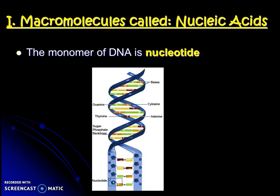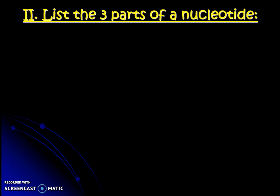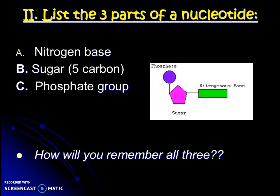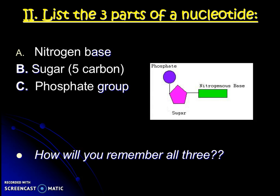A nucleotide is even more detailed than that, so let's learn about the parts that make up a nucleotide. There are three different components that make up these Lego building blocks for DNA. The first is each nucleotide must have a nitrogen base. Each of them also has a five-carbon sugar and a phosphate group. Usually students remember all three by drawing a visual — the phosphate is circular, the sugar looks like a pentagon with five carbons at each corner, and then we have a nitrogen base.